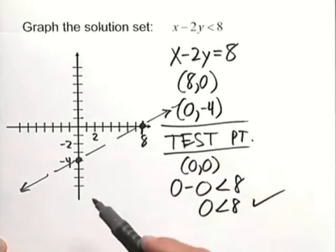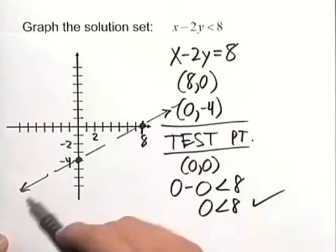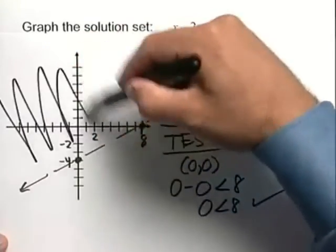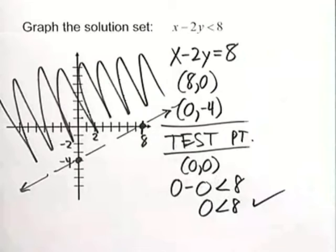So what that means is every ordered pair above and to the left of this line and not including that line will give us a true statement for our inequality. So this is what the solution for this inequality looks like once we've graphed it entirely.